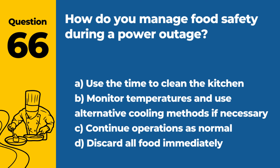Question 66. How do you manage food safety during a power outage? a. Use the time to clean the kitchen. b. Monitor temperatures and use alternative cooling methods if necessary. c. Continue operations as normal. d. Discard all food immediately. Answer b. Monitor temperatures and use alternative cooling methods if necessary. During a power outage, it's important to monitor the temperatures of perishable foods and use alternative methods, such as ice or coolers, to keep food safe.